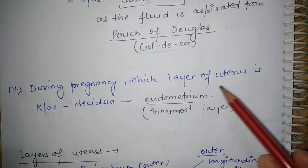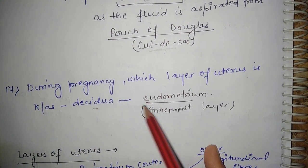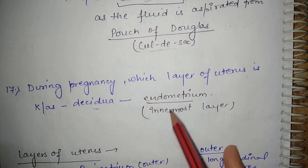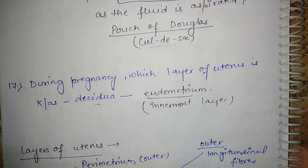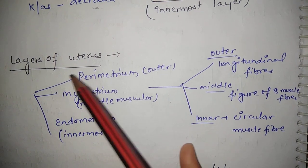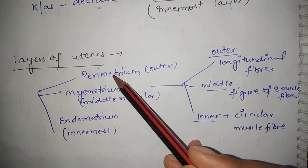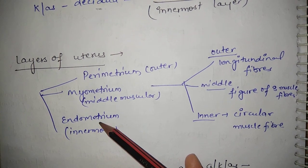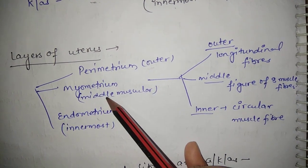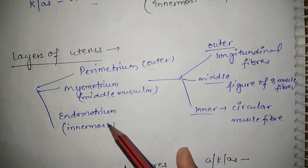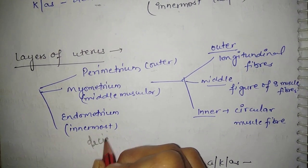During pregnancy, the endometrium layer of the uterus is known as decidua — it is the innermost layer. The uterus has three layers: perimetrium (outer layer), myometrium (middle muscular layer), and endometrium (innermost layer), which is known as decidua during pregnancy.